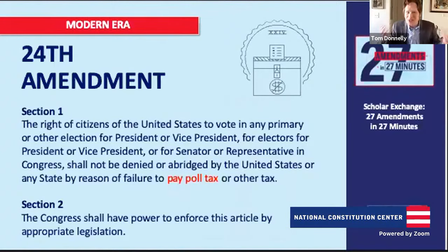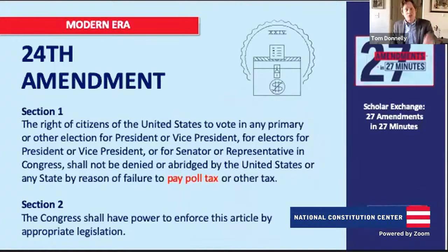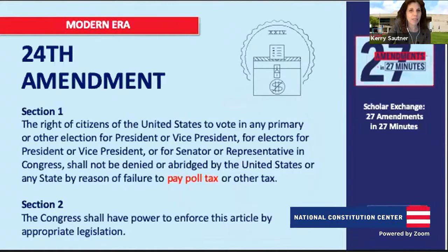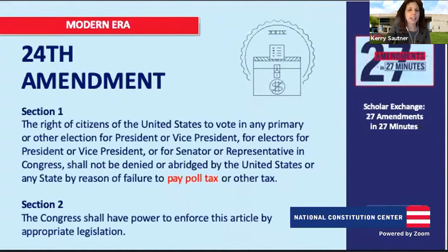When the 24th Amendment was ratified, five states still had poll taxes in place. The Supreme Court had previously ruled poll taxes constitutional. With the 24th Amendment, the people spoke back and said that wasn't right. A few years later, the Supreme Court in Harper extended that ban to state and local elections, reading the 24th Amendment together with the equal protection promise of the 14th Amendment. The 24th Amendment was ratified in 1964.